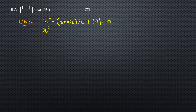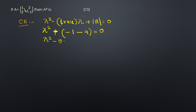This gives lambda squared minus (1 minus 1) lambda plus determinant of A, where the determinant is 1 times minus 1 minus 2 times 2, which equals minus 5. So we get lambda squared minus 5 equals 0, and the determinant equals negative 5, giving lambda squared minus 5 equals 0.